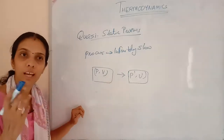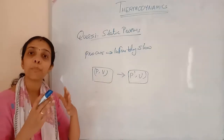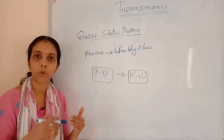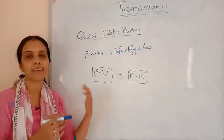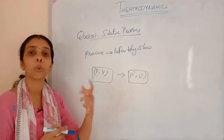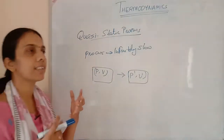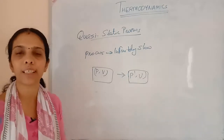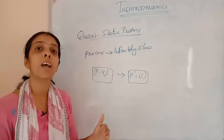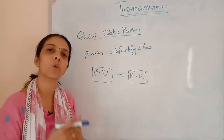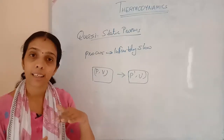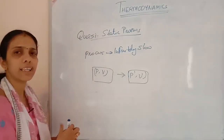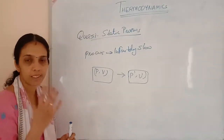Because the process is happening very slowly, we consider the system to be in thermal equilibrium and mechanical equilibrium. It takes a long time to change, so we consider it as being in mechanical and thermal equilibrium. That is what is meant by a quasi-static process.